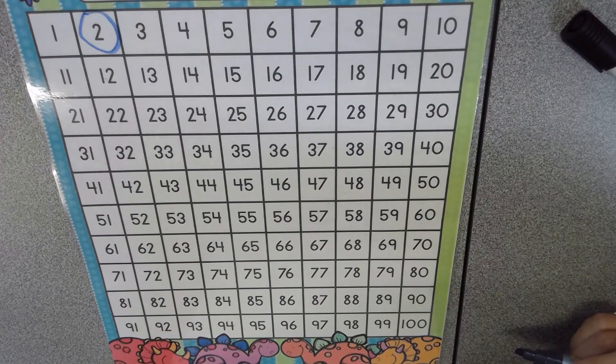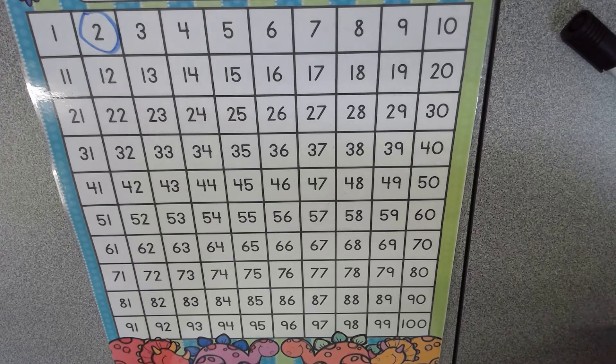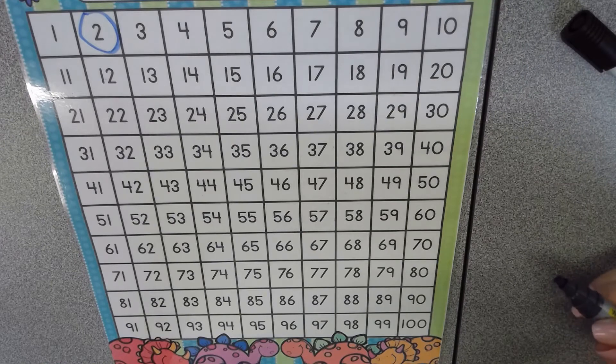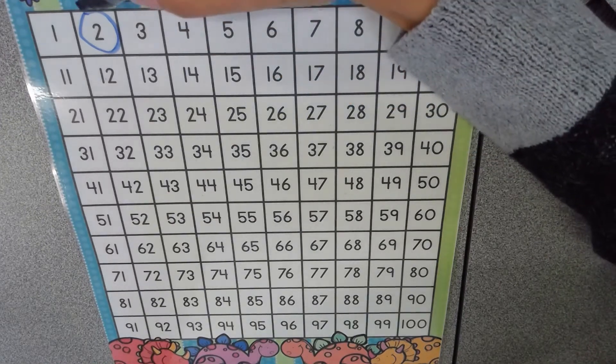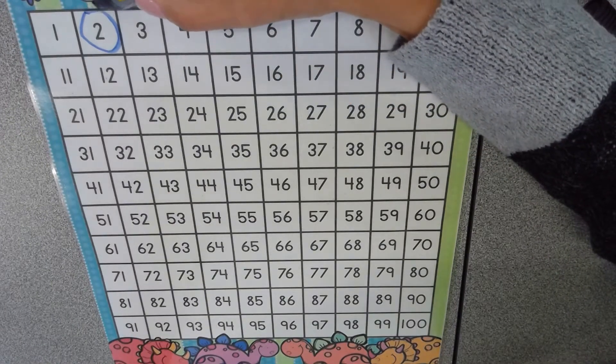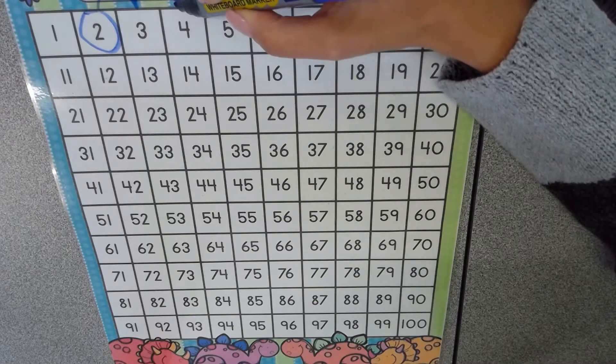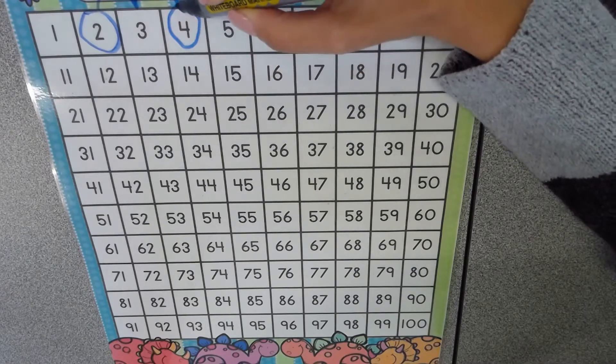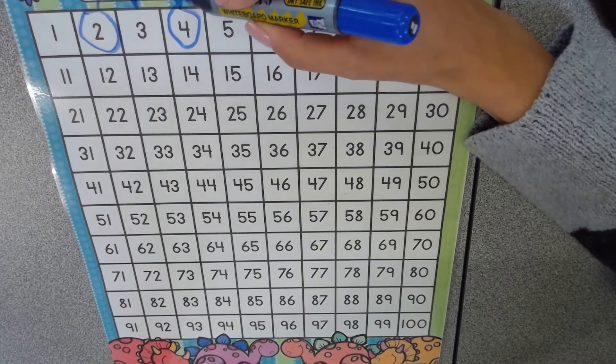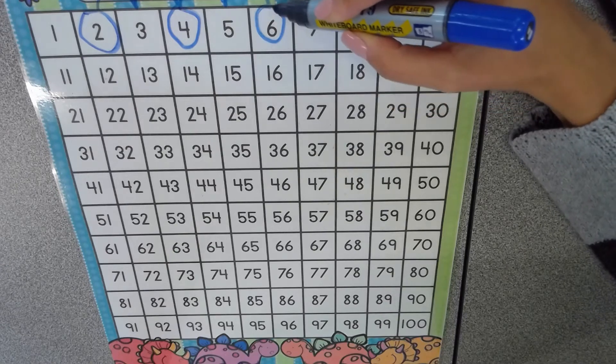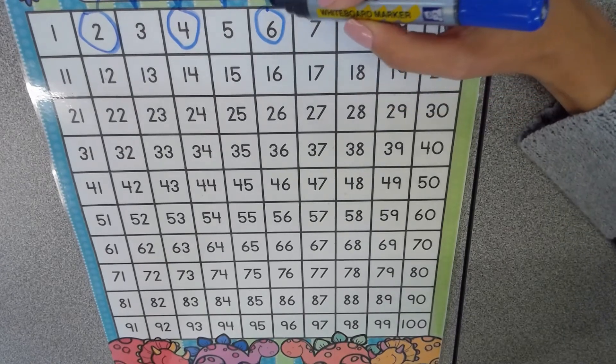In order to skip count by twos, we need to do as the name suggests we skip a number. When we skip counting by twos, we skip every second number. One, two. So the next number in our pattern is four. Let's skip again. One, two. The next number is six. Let's keep skipping.